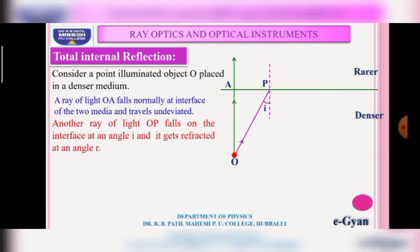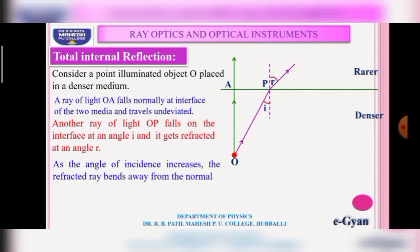Consider another ray OP, which falls on the interface at an angle of incidence i and gets refracted at angle r. This ray is obliquely incident and the refracted ray bends away from the normal, traveling at an angle of refraction r. As the angle of incidence increases, the refracted ray bends further away from the normal.